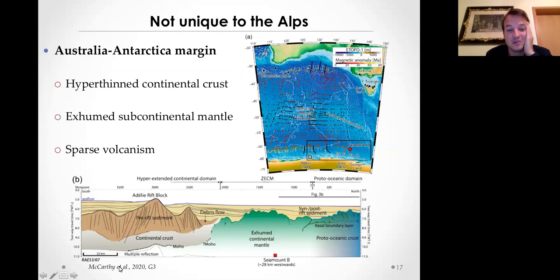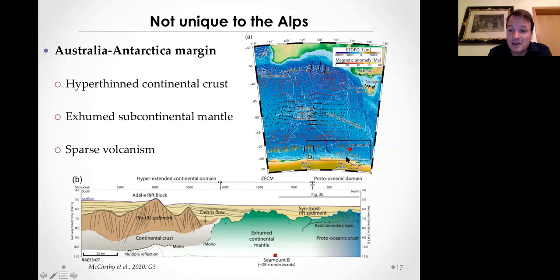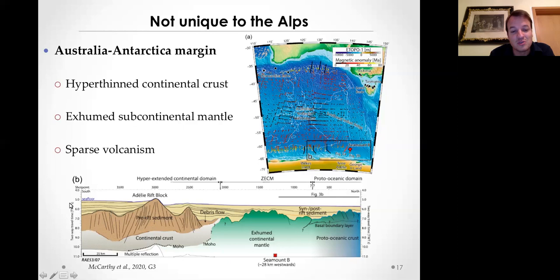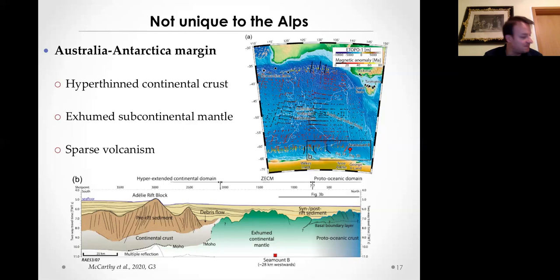This is by no means unique. Along the Australia-Antarctic margin, combining seismic interpretation and dredge samples of the ocean-continent transition zone, there's a large environment of thin continental crust. Toward the continent you have thinned-out continental crust transitioning towards exhumed subcontinental mantle at the seafloor. This can occur over a quite wide distance - 50 to 100 kilometers or more. A certain amount of extension during rifting is really dominated by thinning of continental crust and exhumation of subcontinental mantle.